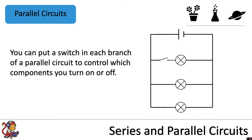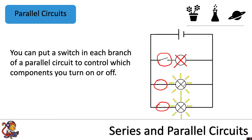You can put a switch in each branch of a parallel circuit to control which components you turn on or off. For example, here we have an open switch in the first branch, a closed switch in the second, and a closed switch in the third. In the first branch we've got an incomplete circuit, so whilst this switch is open the first lamp would not light up but the other two would. We are in control of which lamps are on and off — if we wanted to turn a lamp off we would open the switch, and if we wanted it to shine again we would close the switch.